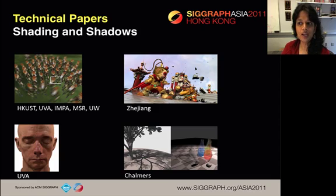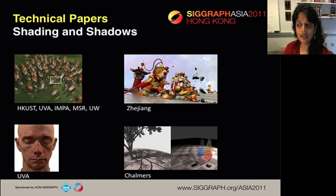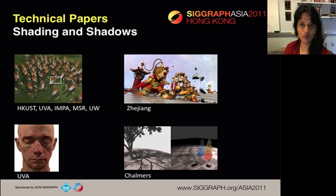In the Shading and Shadow session, we have a real-time rendering paper that uses image-based bi-directional reprojection to increase frame rates. A method to reuse shading for micropolygon-based rendering algorithms. A genetic programming approach that automatically simplifies pixel shaders for better performance. And a pixel-accurate, real-time shadow algorithm.